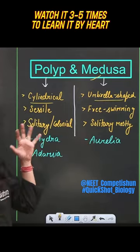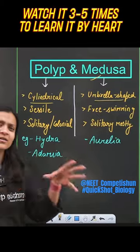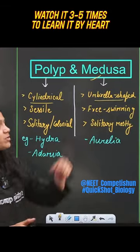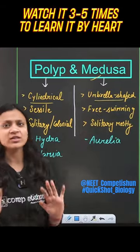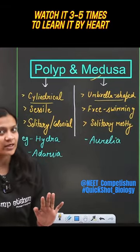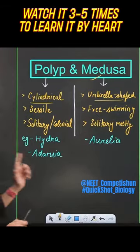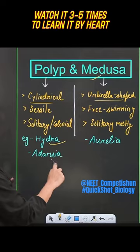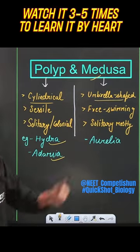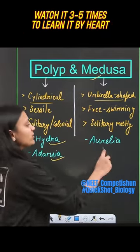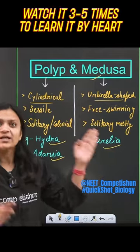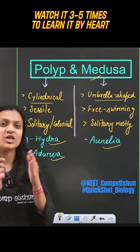Polyp can be colonial, or sometimes in colonies, while medusa is generally solitary. In examples, you have to remember Hydra and Obelia. And medusa is the stage which is the common name of jellyfish.